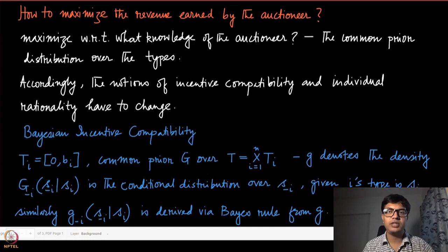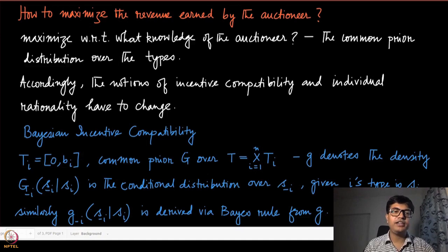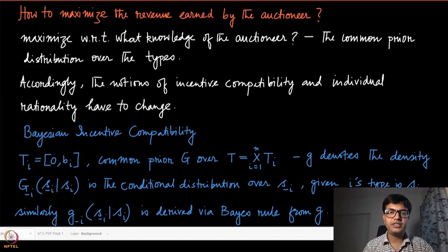The reason is that when the auctioneer is selling an object, it might also have some information about the valuations of the buyers from previous interactions — if similar objects are being sold over time. Then it has some sort of prior about what the valuation distribution is, and accordingly we can define the expected revenue that can be earned from this mechanism.